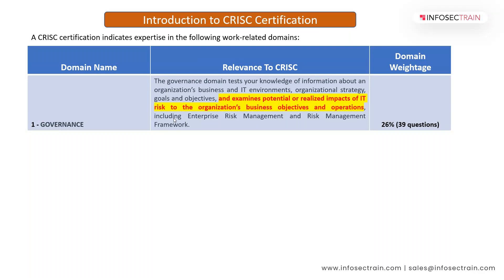Domain one is Governance. You will see three columns in the slide: domain name, weightage, and what it mainly covers. Governance is essentially monitoring and governing things through policies and procedures. This domain mainly tests your knowledge about an organization's business and examines potential impacts of IT risk to the organization's business objectives. Always remember that IT has to be aligned with business.